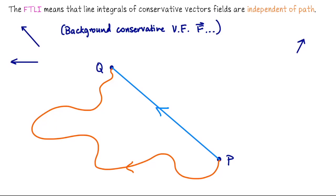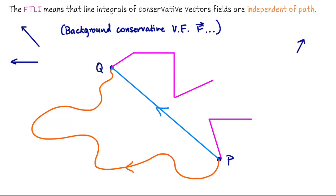But it would be the exact same line integral if I just took a straight line from P to Q, because for both line integrals all I'm going to do is evaluate the potential function on Q and subtract off evaluating the potential function on P. The path between them doesn't matter. The line integral of F along these two paths would have the same value — and also the same value along a piecewise smooth path, where you would need to set up a bunch of integrals.